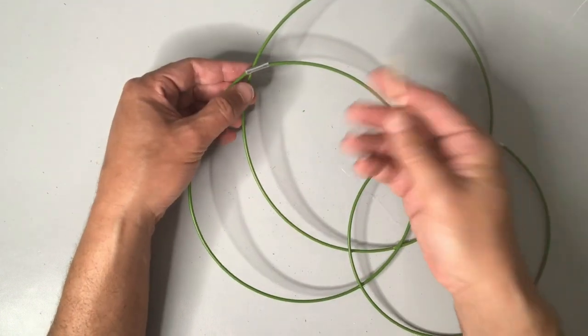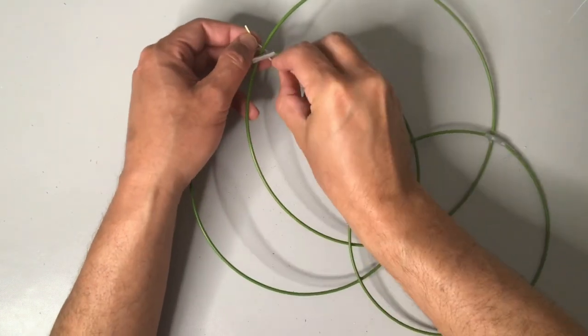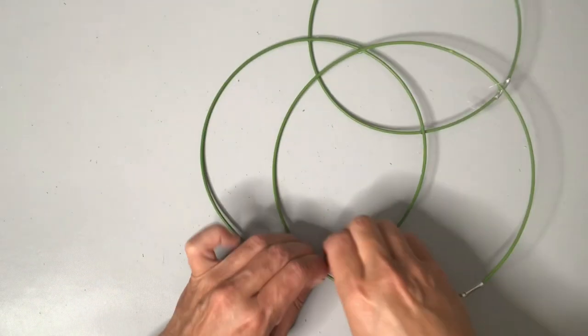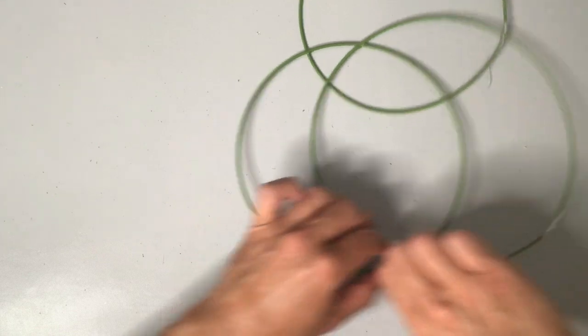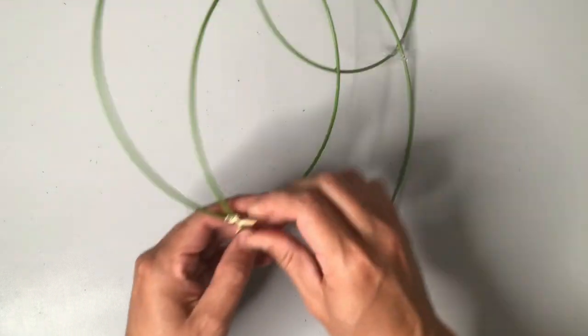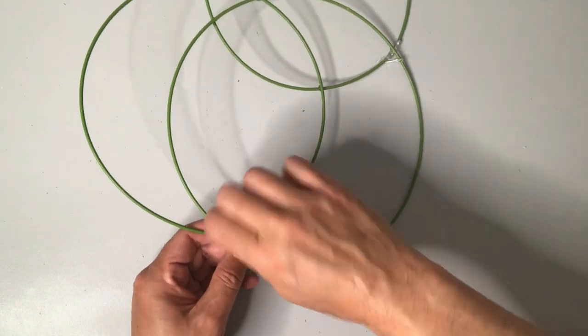I don't know if anyone else does this as well but I tend to save my twist ties and I put them in my utility drawer because I tend to use them a lot for crafts. When it comes to crafting I can be very utilitarian and I'd like to work on the cheap as much as possible.